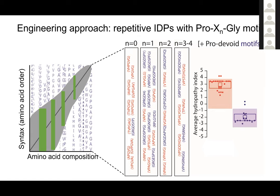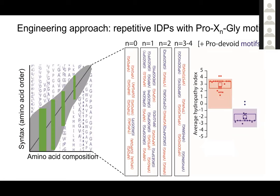A clarification question: you fix the proline and glycine, and inside the spacer region you have various combinations of other residues? Yes — we split by spacings where n equals zero, one, two, three, or four, and these are just amino acids added between the proline and glycine module. Then there are many copies of each of these motifs. So we play with the length, and that is the syntax of the individual repeat unit, and we can make however many repeats we want.